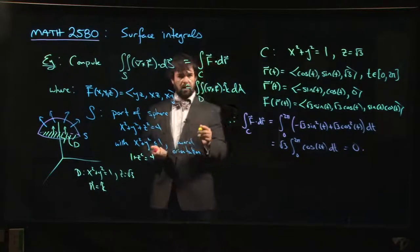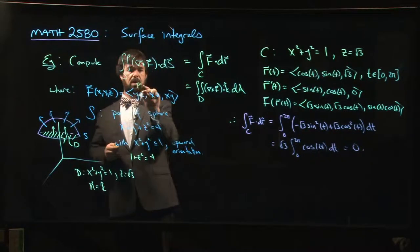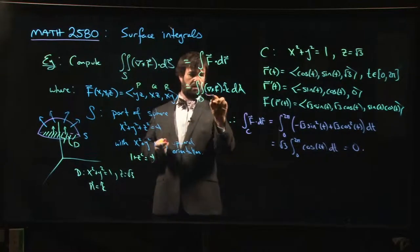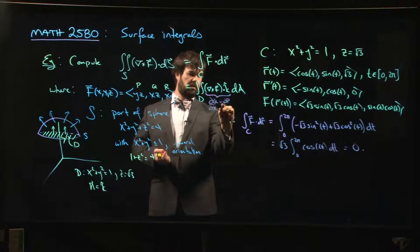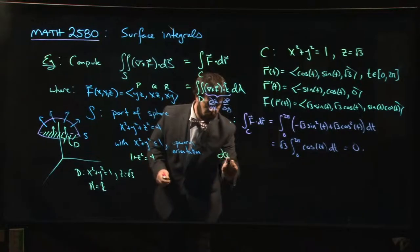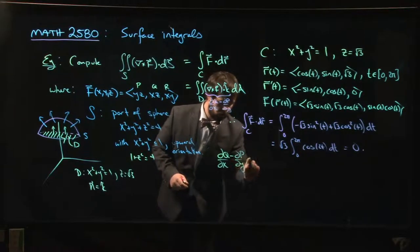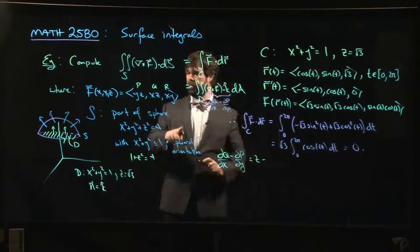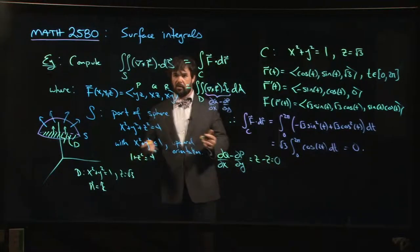So I just need, and actually, I know I only need the k component of the curl, so I don't even have to compute the entire curl. If this is p, q, r, I know what this is because this is exactly what shows up in Green's theorem. This is dq dx minus dp dy. So let's go ahead and compute that. If I do dq dx minus dp dy, dq dx is z, dp dy is z. Oh, I get zero before I even have to do the integral.